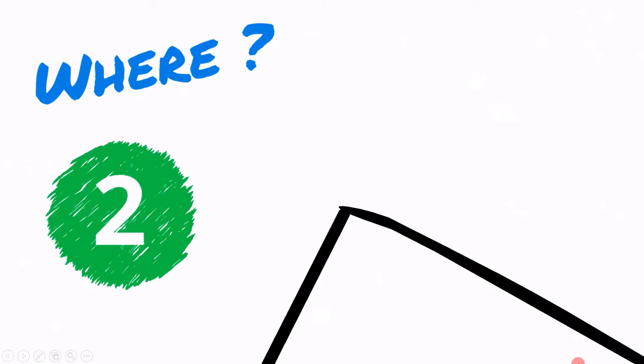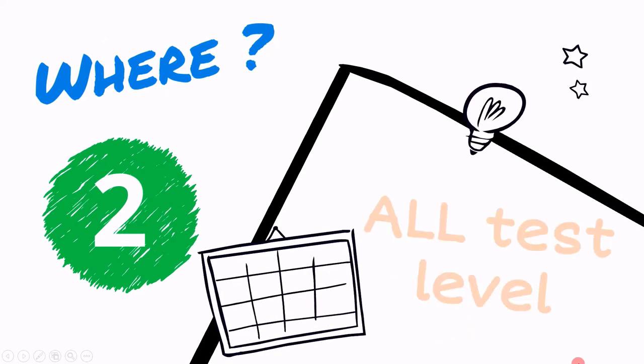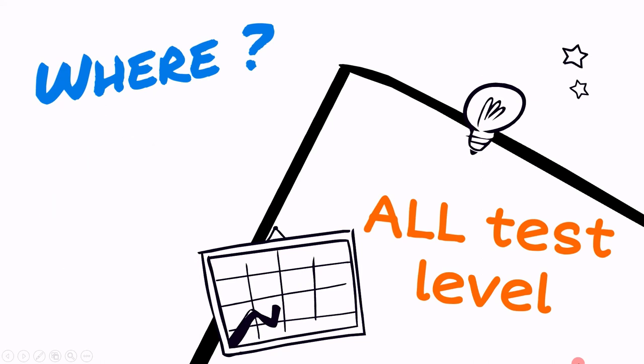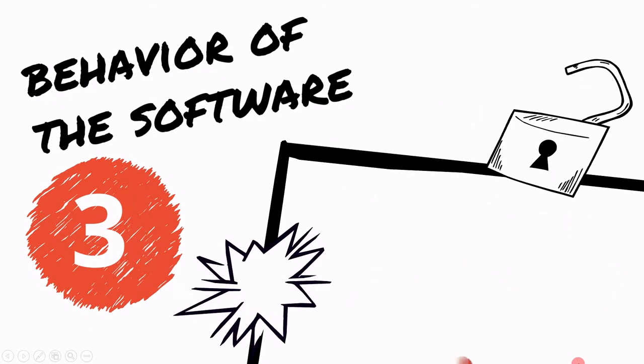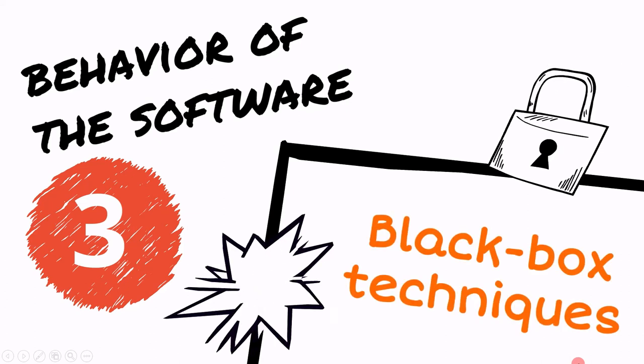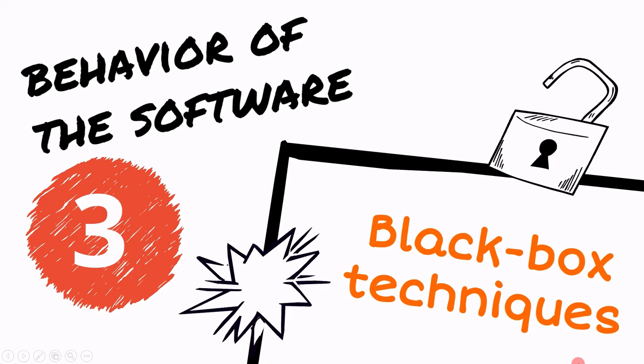The next point is where and when we can perform non-functional testing. We can perform it at all test levels, and the late discovery of a non-functional defect can be extremely dangerous to the success of a project. Similar to functional testing, the behavior of the software in non-functional testing is tested using black box testing technique. For example, boundary value analysis can be used to define the stress condition for performance tests.